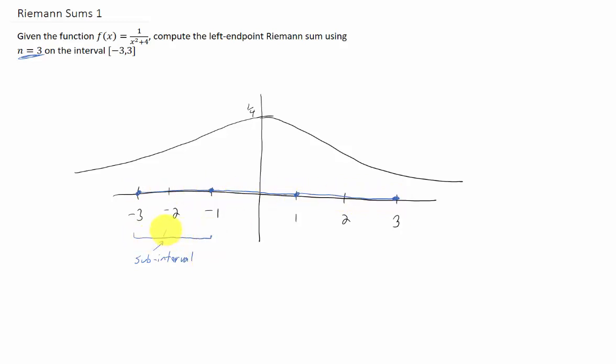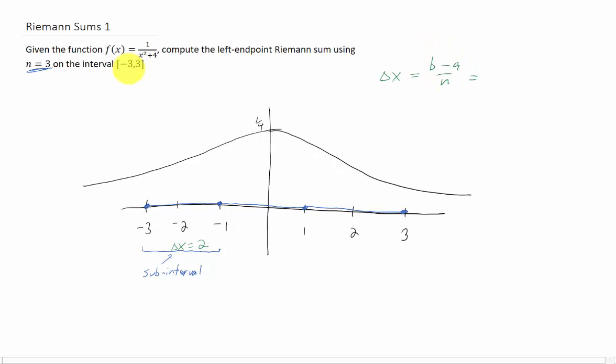And the width of each one of these subintervals is typically called delta x. And in this case, the width of each one of these subintervals is 2. Now if we wanted a more mathematical way to find what delta x was going to be, we would calculate b minus a over n, where our interval goes from a to b. So in this particular problem, our numbers would be 3 minus negative 3 over 3, which is 6 over 3, which is 2, which is the delta x that we got down here.